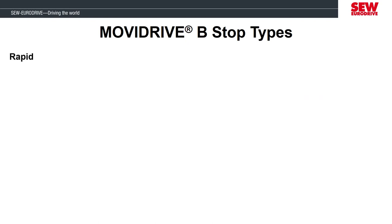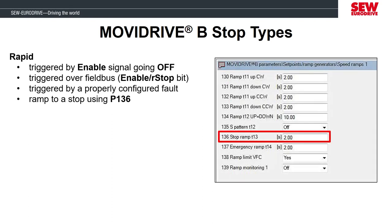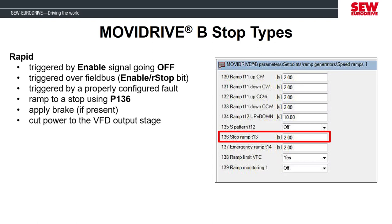The next stop type is a rapid stop. We saw that in the last lab when we turned off the enable input, and also when we changed the fault response parameter to be a rapid stop. The rapid stop ramp has its own parameter. Once the motor is stopped, it will apply the brake and then cut off power to the output stage.